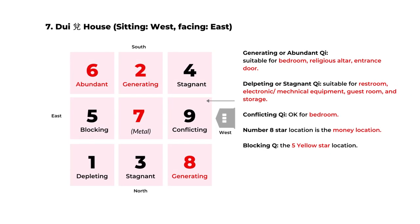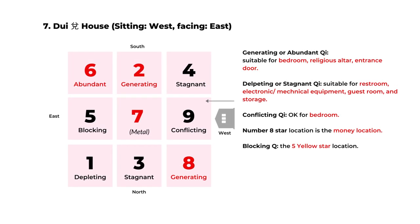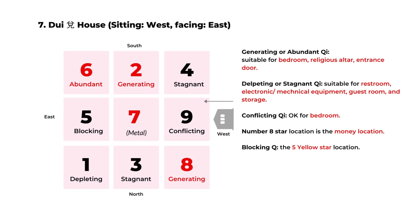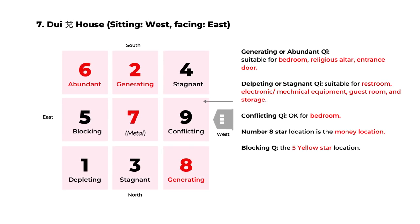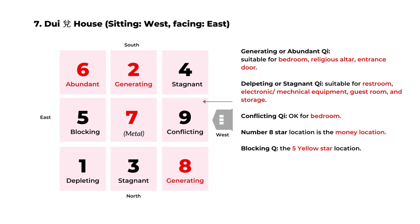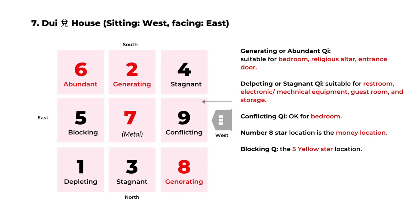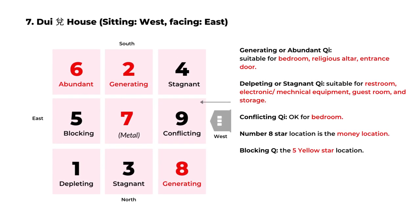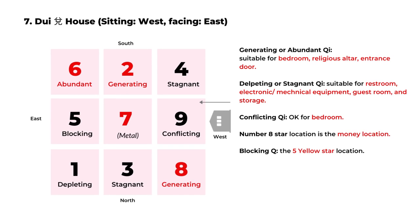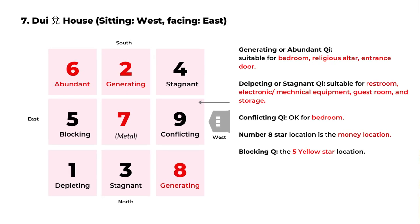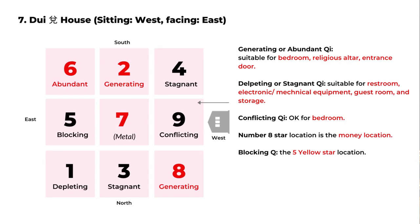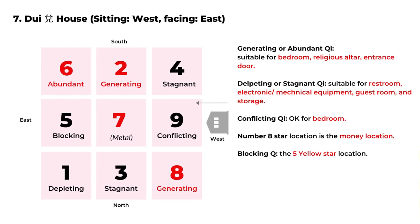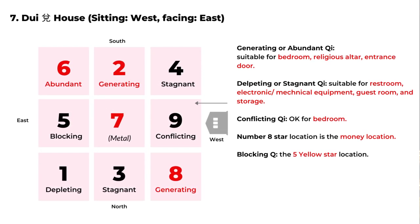The next chart is for the Dui house — a house sitting on the west side and facing east. In the center is the number seven flying star, belonging to the metal element. Based on the five element relationship in every corner, the generating Qi includes the south area and the northwest, and the abundant Qi is in the southeast. The number eight star for money luck is in the northwest too. You can set up your feng shui according to the chart.